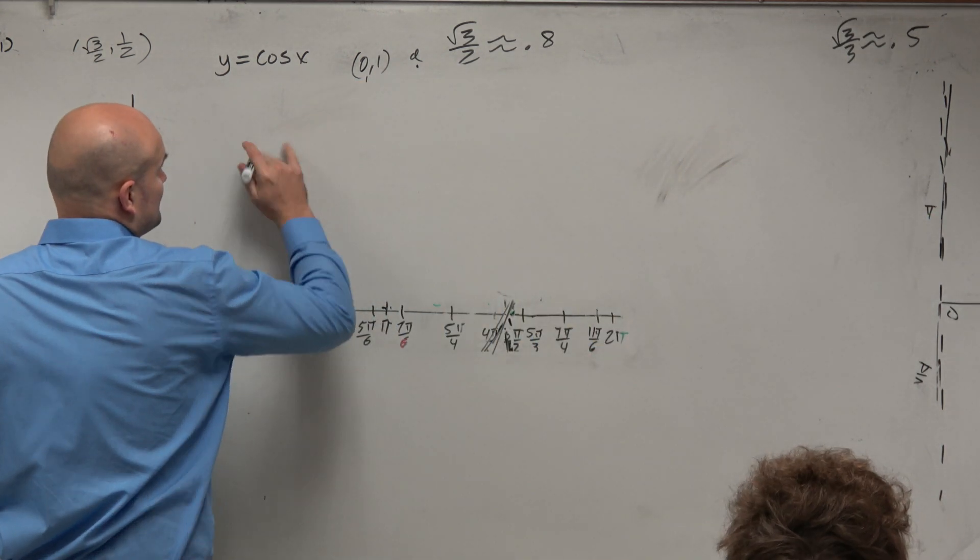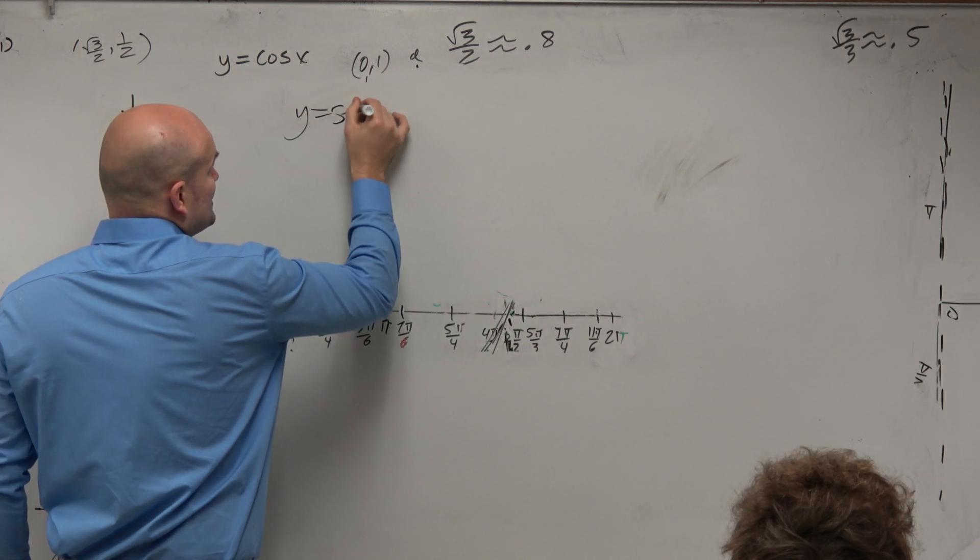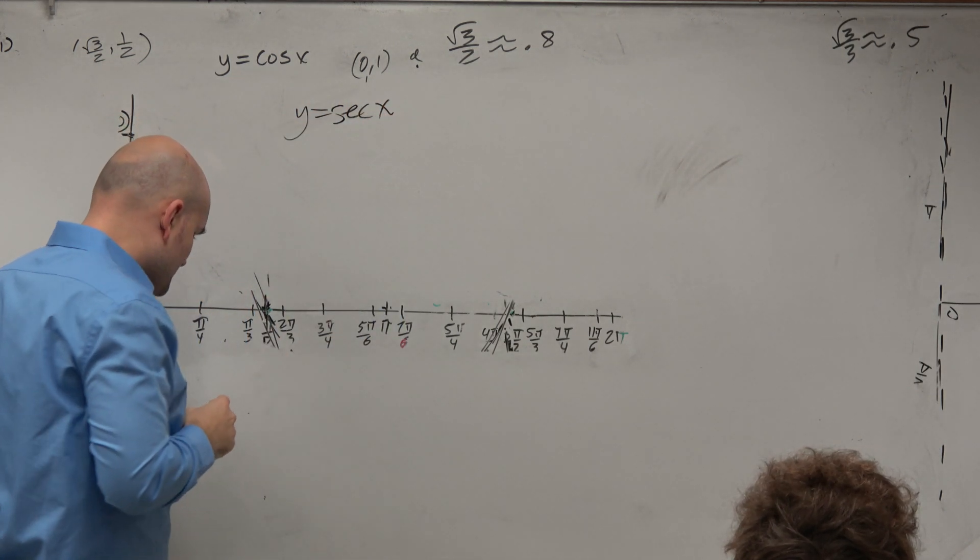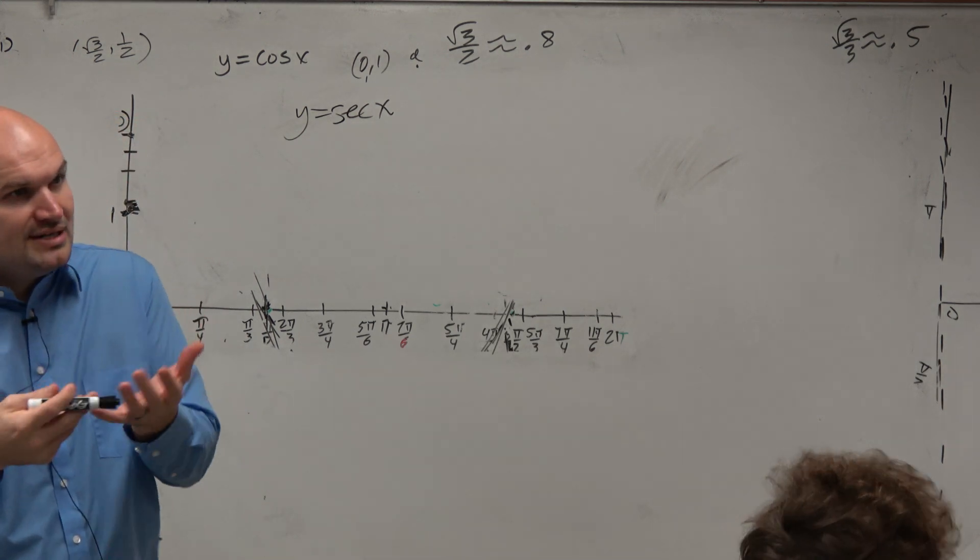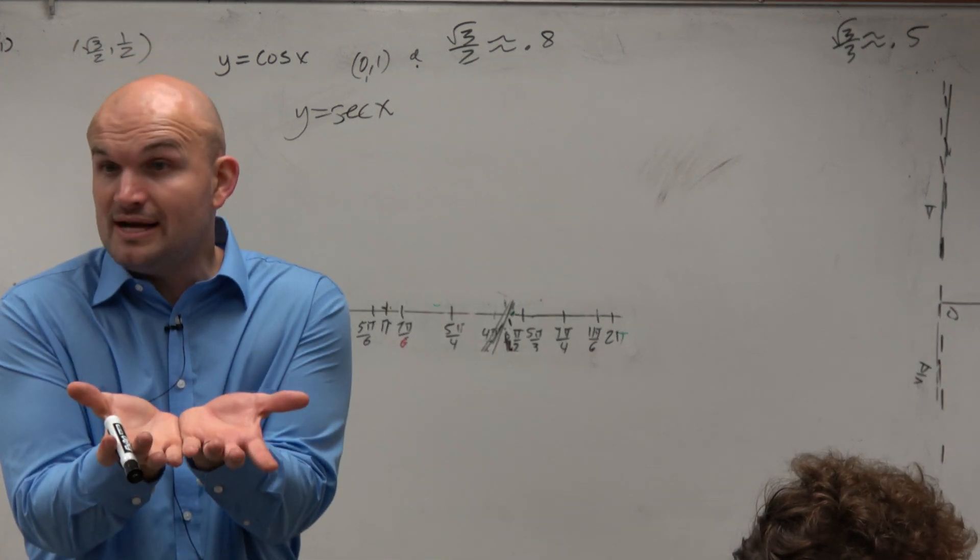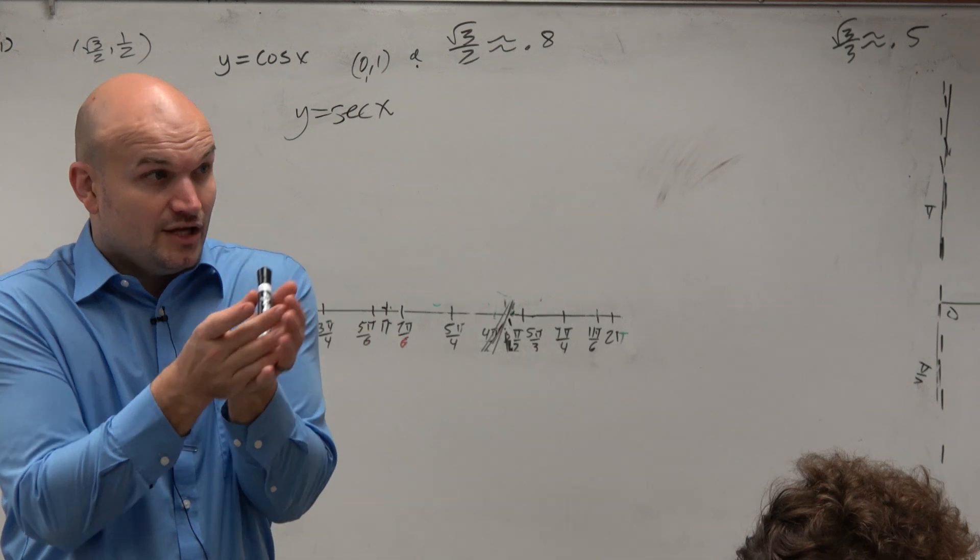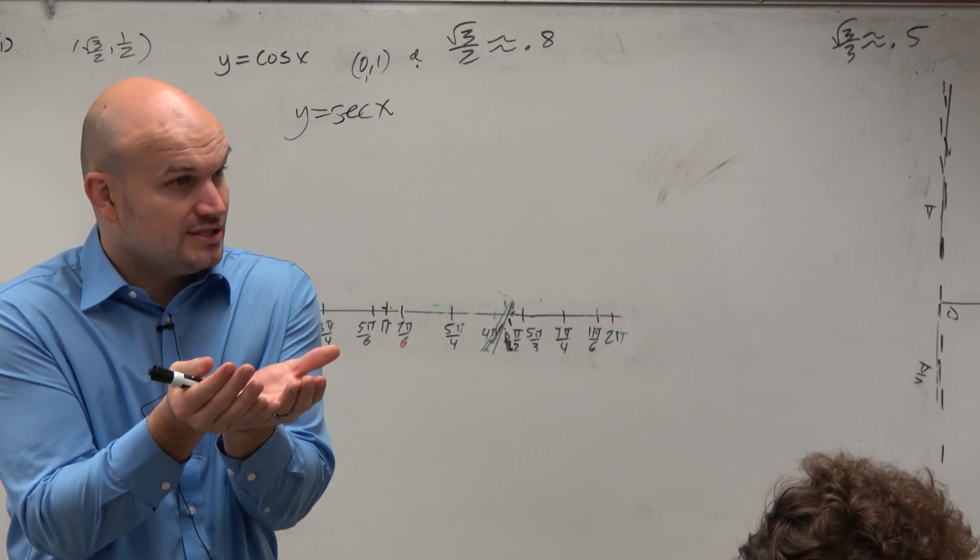So there's a couple things to keep in mind. If I wanted to graph y equals secant of x, the first thing I want to do to understand secant is think about what is most related to the secant. And that's the cosine graph. Secant and cosine are reciprocal functions, right?